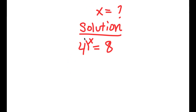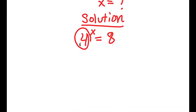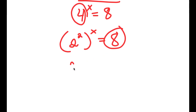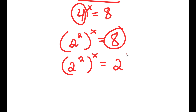Now 4 is the same thing as 2 squared, so I'm going to rewrite this as 2 squared to the power of x — all I did was replace 4 with 2 squared. And 8 is the same thing as 2 to the power of 3, so I replace 8 with 2 to the power of 3. So I have 2 squared to the power of x is equal to 2 to the power of 3.